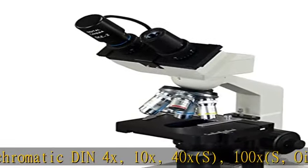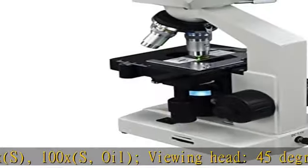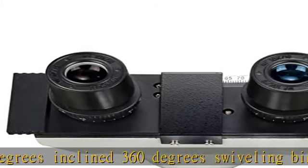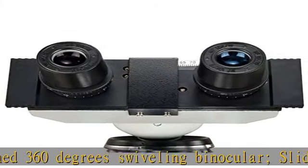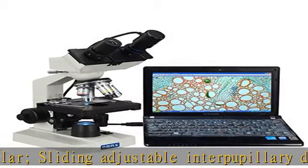Viewing head: 45 degrees inclined, 360 degrees swiveling binocular. Sliding adjustable interpupillary distance 55-75mm. Ocular diopter adjustable on both eye tubes.